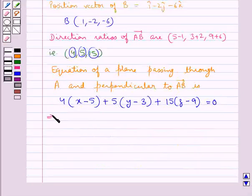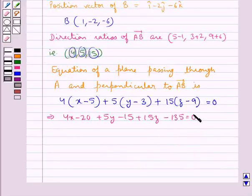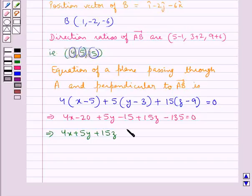so this means we have 4x minus 20 plus 5y minus 15 plus 15z minus 135 equals 0, which simplifies to 4x plus 5y plus 15z minus 170 equals 0